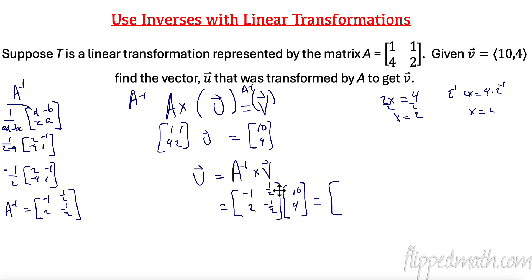So negative 1 times 10 is negative 10. Half of 10 is then, oh, excuse me, half of 4 is then 2. 2 times 10 is 20. Negative half of 4 is negative 2. So we would have negative 8 and 18.